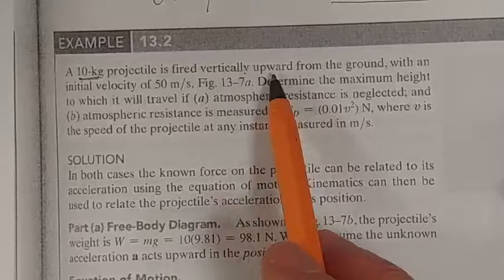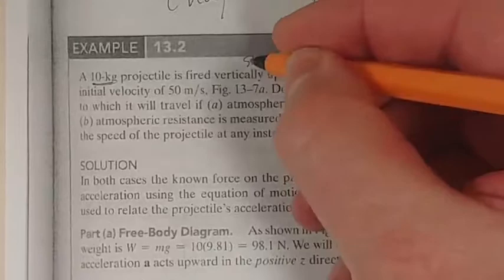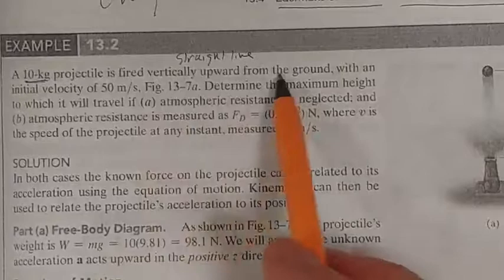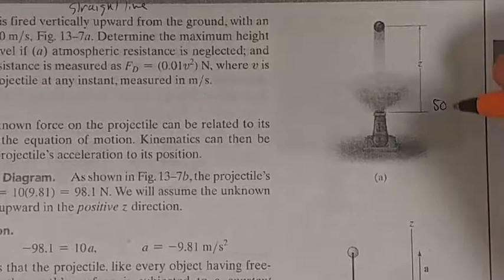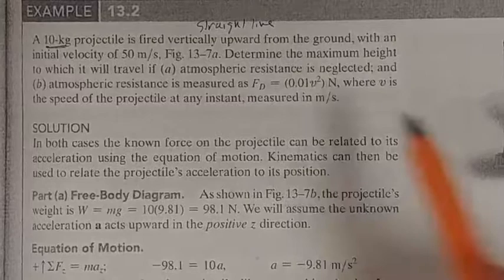A projectile there is fired vertically upward. What do you notice there? Vertically upward. We're looking at straight line motion from, vertically upward from the ground with an initial velocity of 50 meters per second.